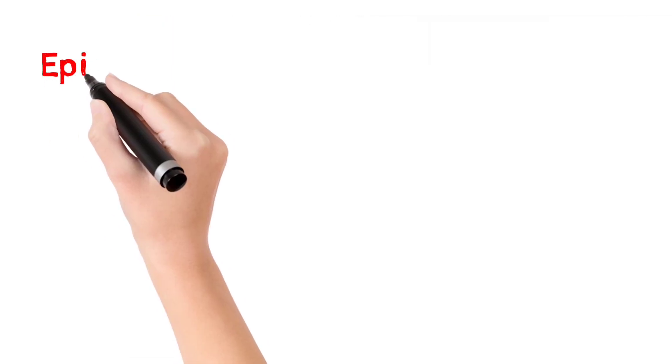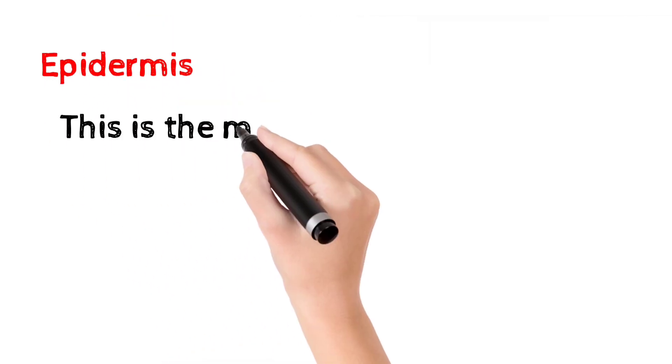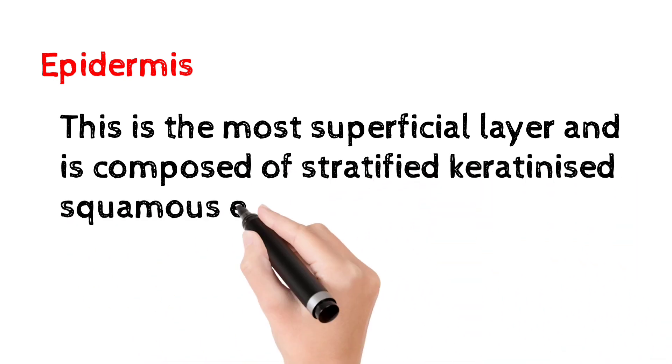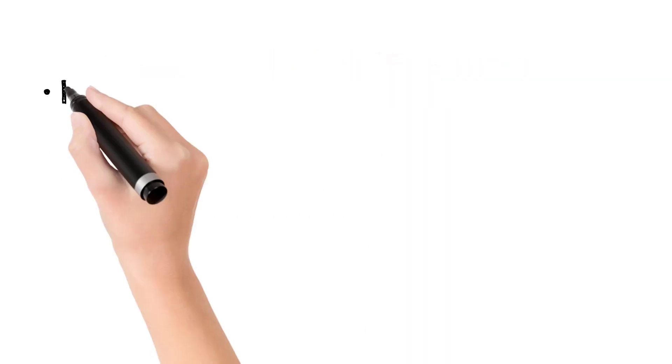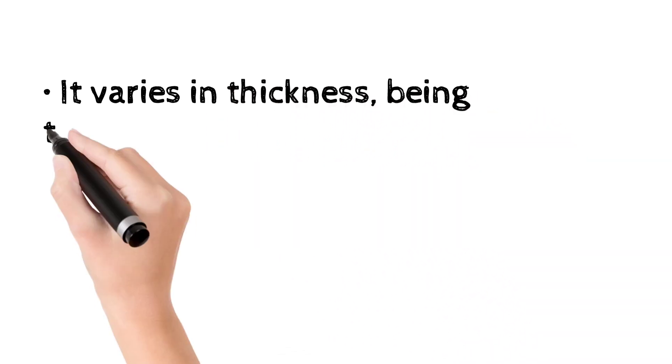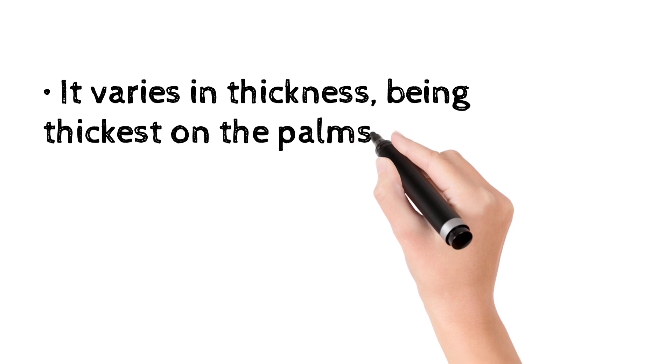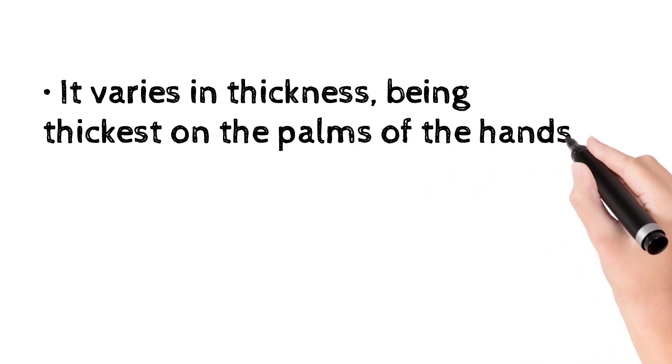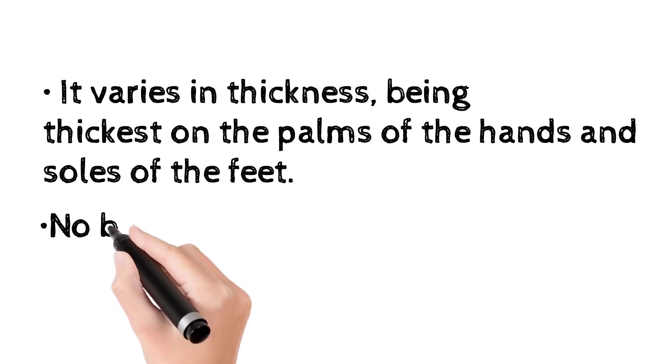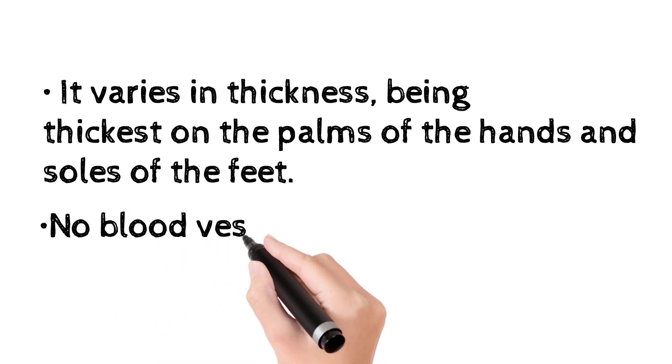Epidermis is the most superficial layer and is composed of stratified keratinized squamous epithelium. The epithelial thickness varies in areas like the palms and soles of the hands.